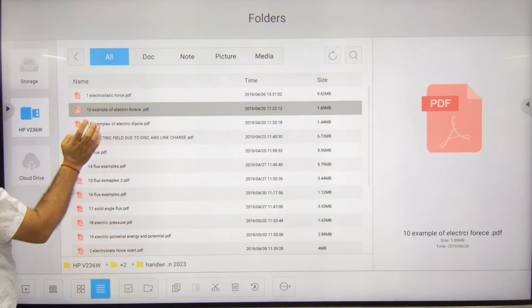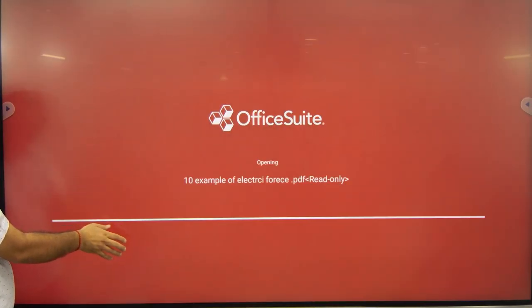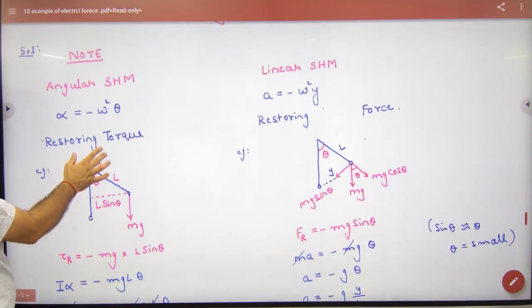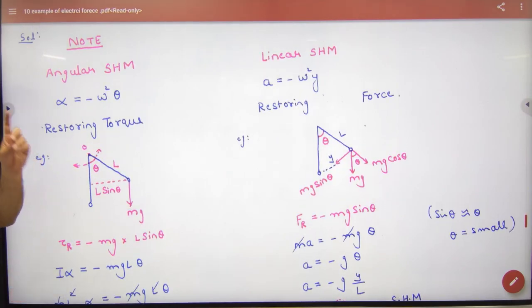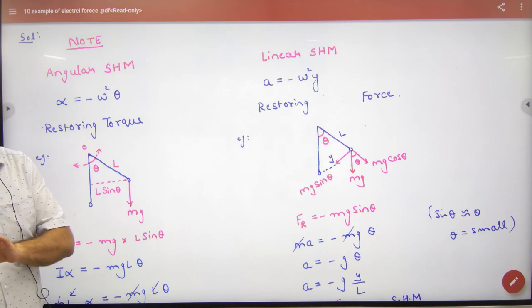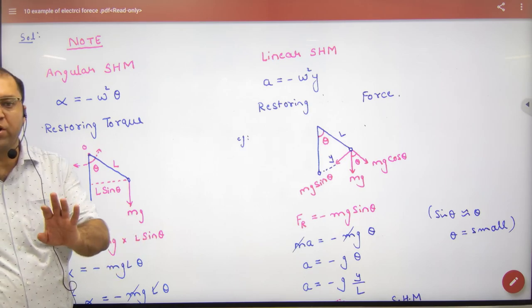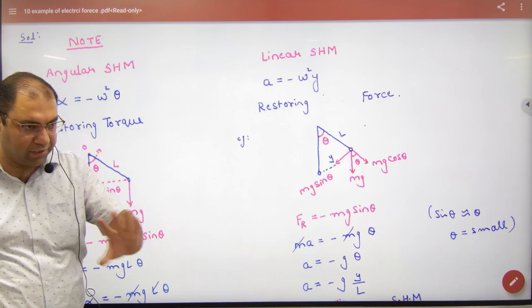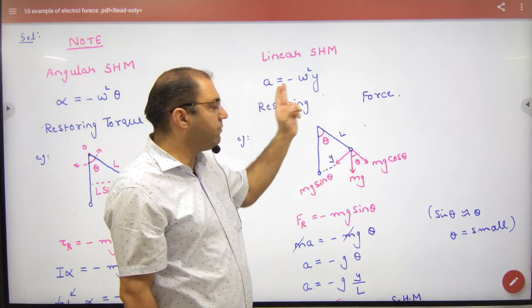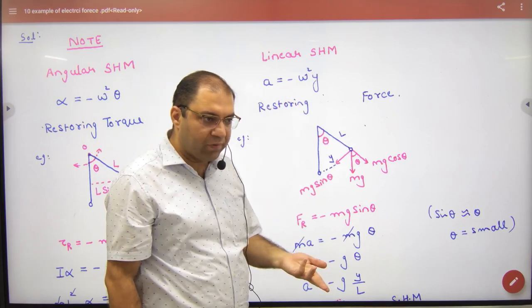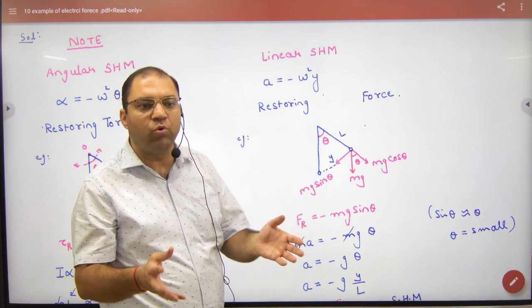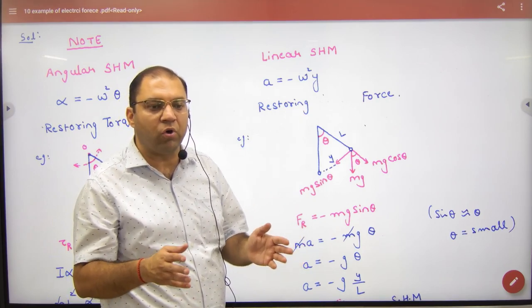For angular SHM, there were 2 types of SHM. The first is linear SHM. When someone would not rotate, they would move. And what was the equation of linear SHM? Acceleration is minus omega square Y. This is SHM's equation. And in linear SHM, what were we looking for to prove it? Restoring force.